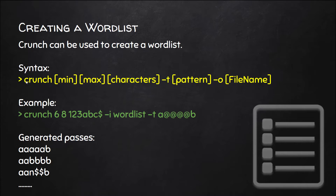With crunch, you have to put in a minimum and maximum character length for the password. So the minimum is six characters and the maximum is eight characters. Then you specify the character set — for example, numbers or letters — that the password will be generated from. This is used for Wi-Fi hacking.